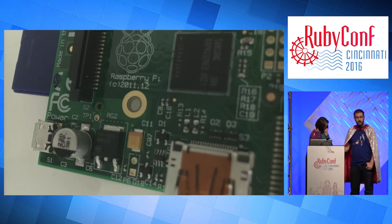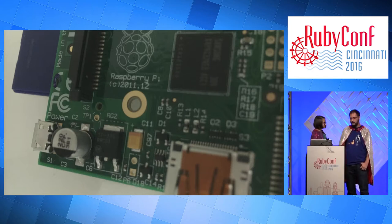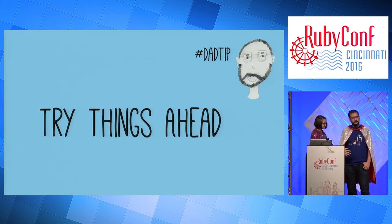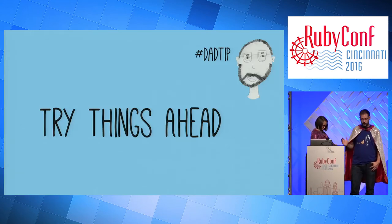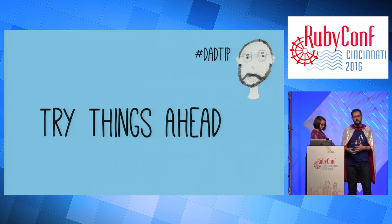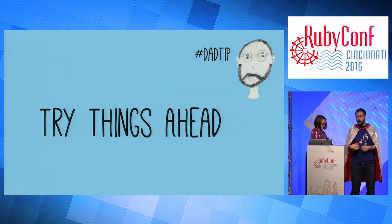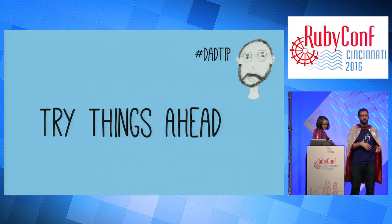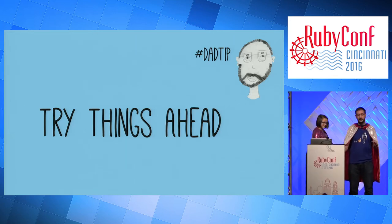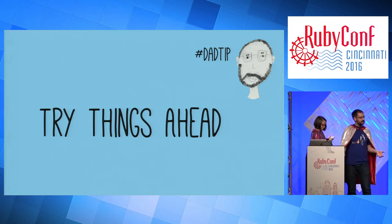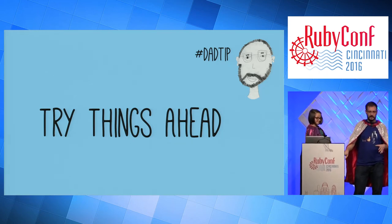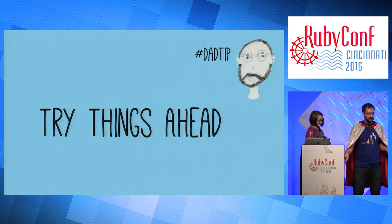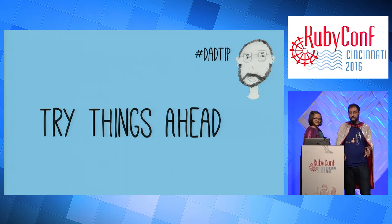That brings us to our next dad tip: it's good to do things with the kid, but it's also valuable to try some things out yourself ahead of time. I had never worked with a Raspberry Pi prior to this project, so I sat down without Cora first to debug, make sure the thing was going to run, make sure we had all the pieces. That way when we sat down together, we weren't going to hit road blocks and spend an hour looking through web pages. Do as much as you can with the kid for real, but make sure you're not going to get blocked.